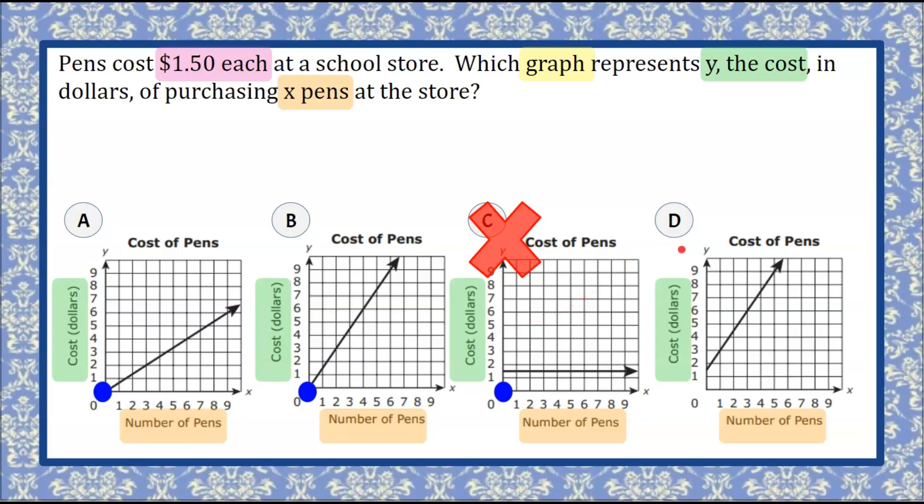Let's look at graph D. Plotting the point (0, 0) on graph D, we can see that it's also not on the line. This graph tells me that if I buy zero pens, again, it costs me over a dollar. So we're going to eliminate graph D.